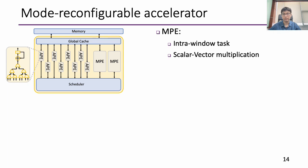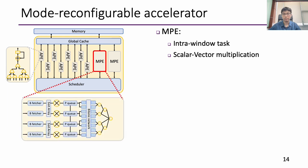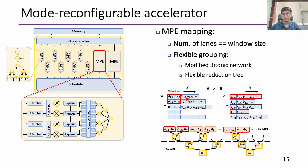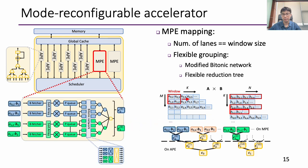We now dive into the design of the most important unit, MPE. It consists of multiple computation lanes which perform scalar-vector multiplications, a bitonic network, and a flexible reduction tree which performs adaptable partial sum merges. To map a window, the window size is set to match the number of lanes in MPE. For example, with a window shape of 2x2, elements come from two separate task trees, and we configure MPE to compute them into two separate groups, supported by the modified bitonic network which can output separately sorted products, and a flexible reduction tree which can be split into sub-trees to perform independent reductions.